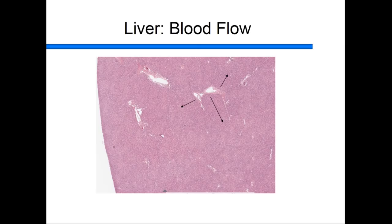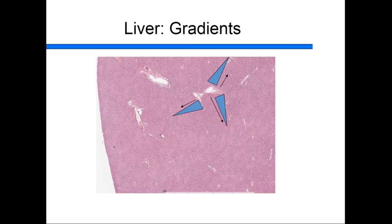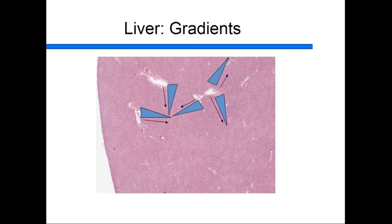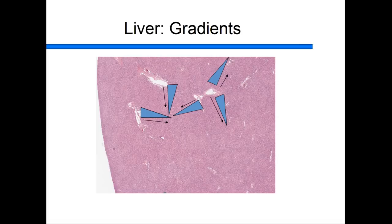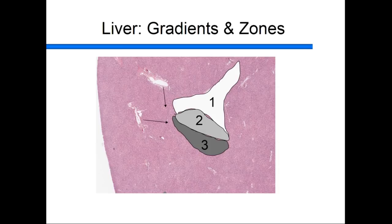The zones simply reflect where hepatocytes are with respect to the gradient of blood flow. People think of these as circles around the terminal venule, but that's not true. The blood flow goes through the portal triads through the triangle and exits through the terminal venule. As it goes through, there is a gradient of nutrients and oxygen, and with decrements of oxygen and nutrients as it passes through, the topology creates true triangles. Zone 1 has first dibs on oxygen and nutrients, zone 2 has second dibs, and zone 3 gets last dibs — giving zone 3 its triangular shape.